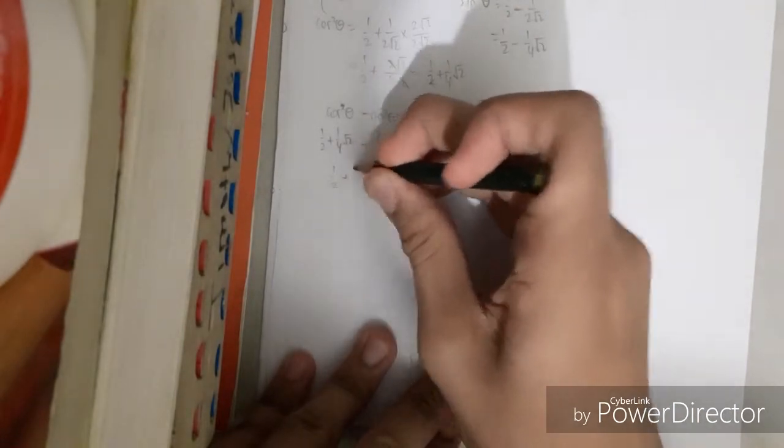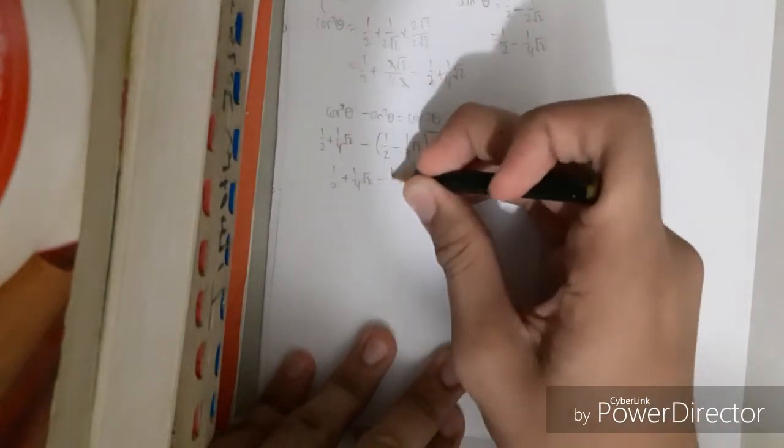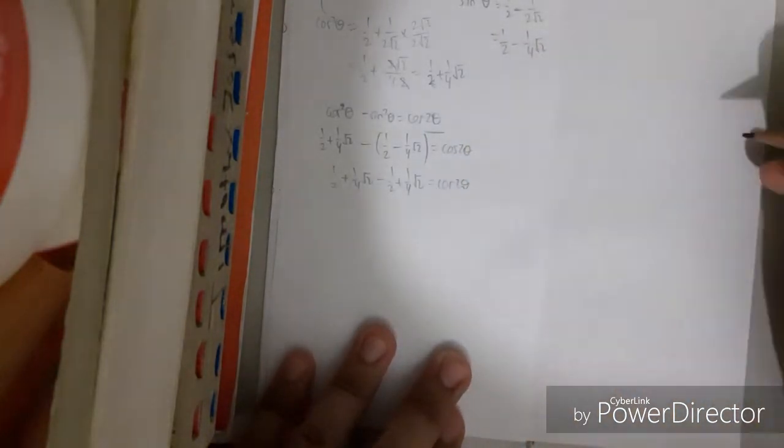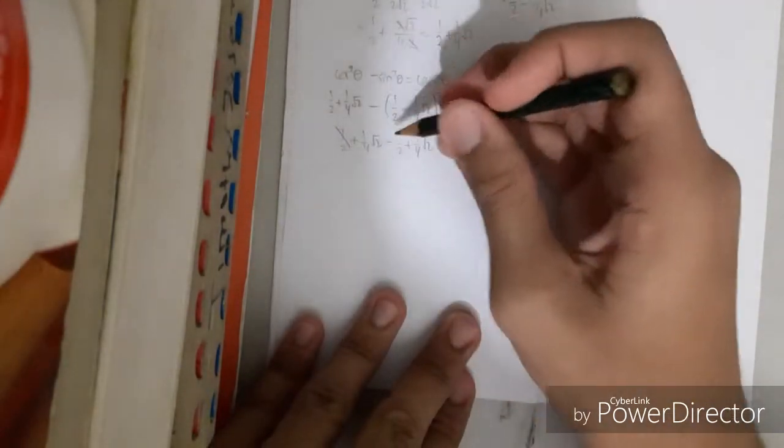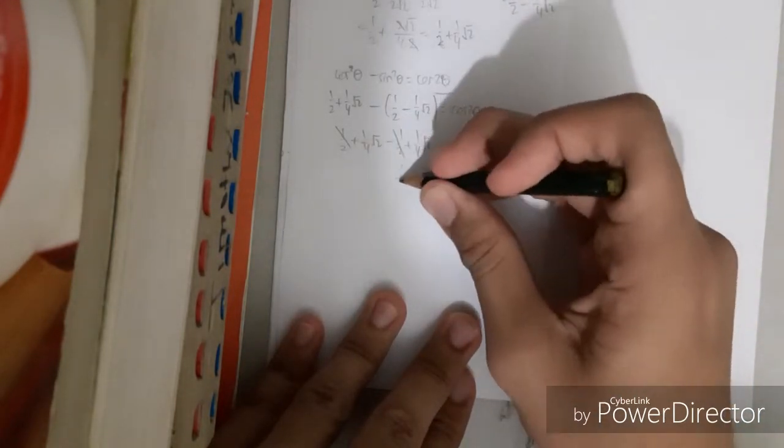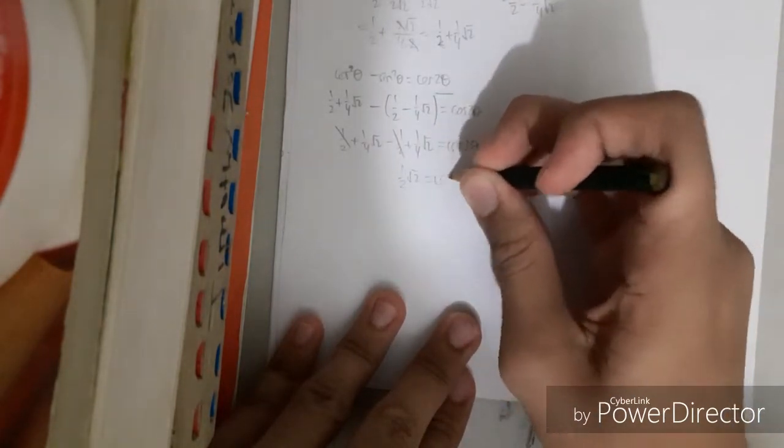One half plus 1 fourth root 2 minus 1 half plus 1 fourth root 2 equals cos 2 theta. We can subtract this, and this equals 2 over 4 which is 1 over 2 root 2 equals cos 2 theta.